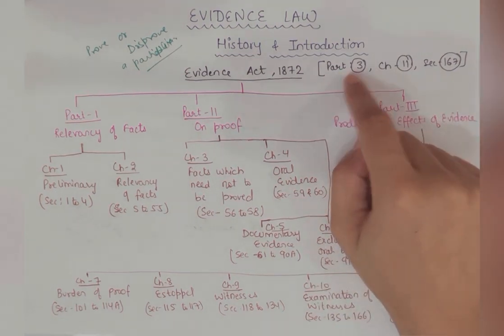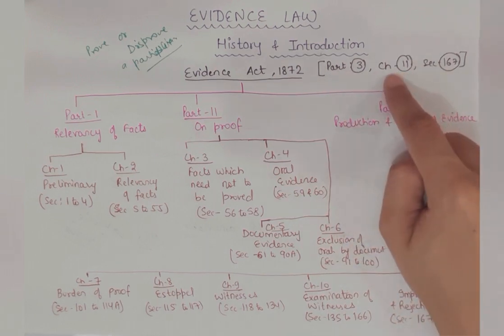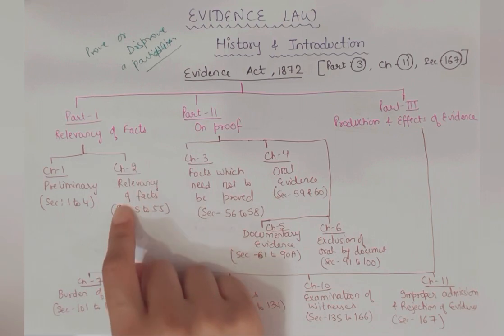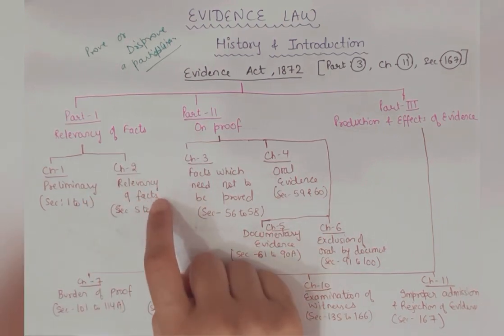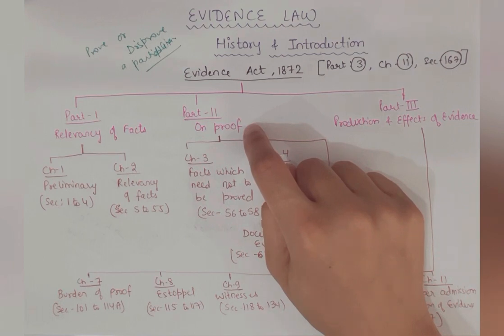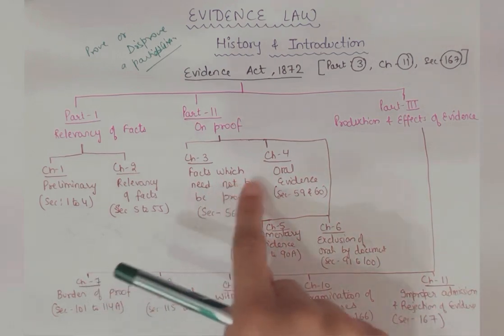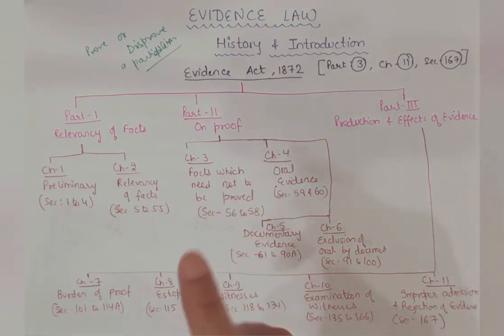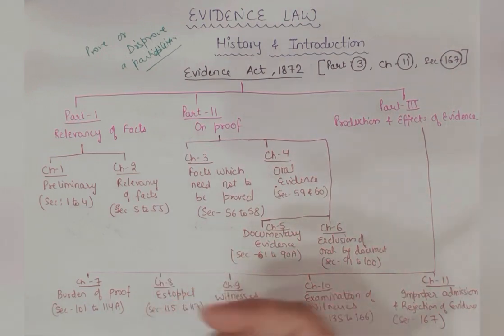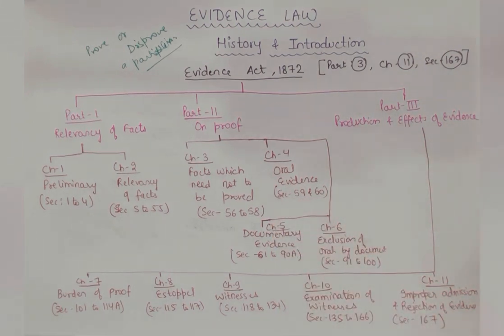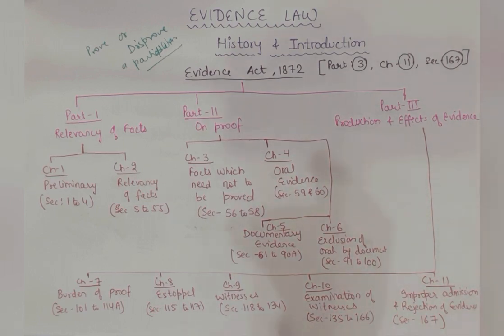This is what we are going to read in Evidence Act 1872. Evidence Act basically includes three parts. It has 11 chapters consisting of 167 sections. Part one is related to relevancy of facts - in it we will cover chapter one and two: preliminary and relevancy of facts. Part two is on proof, and in it we are going to cover four chapters: facts which need not to be proved, oral evidence, documentary evidence. Each chapter is very important - you have to watch every video, don't miss any because every video contains very important information.